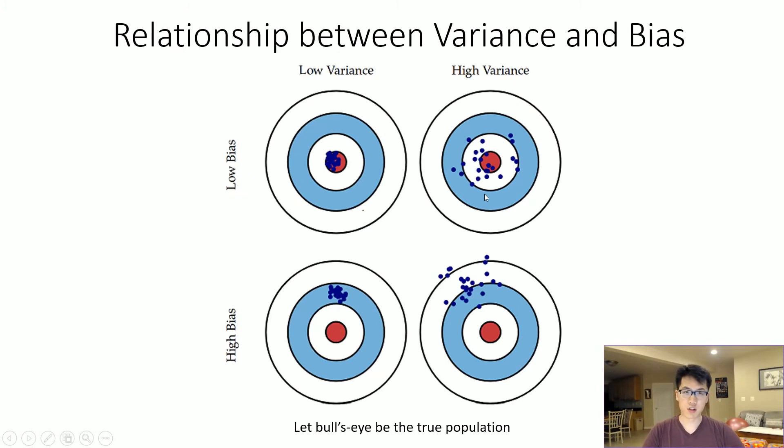This is a great visualization of the relationship between variance and bias. In the top left corner, we have low variance and low bias. Given that our target is the red bullseye, low variance means we're very close to the true value, and low bias means all our values are in the same place—relatively accurate.